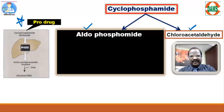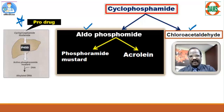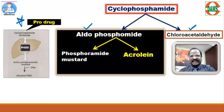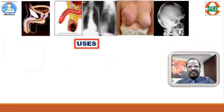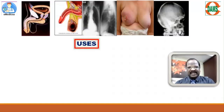Aldophosphamide further undergoes metabolism to produce two more important metabolites: phosphoramide mustard and acrolein. Of these two metabolites, acrolein is the dangerous metabolite causing many side effects. So the metabolites of cyclophosphamide include phosphoramide mustard, acrolein, and chloroacetaldehyde.